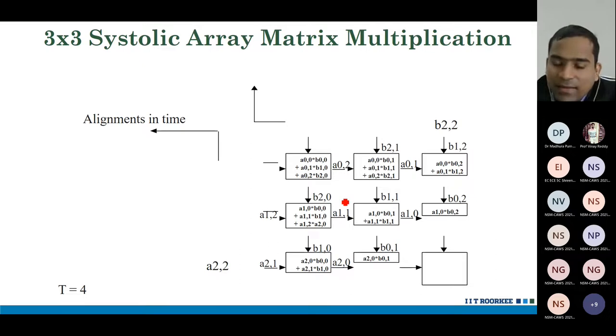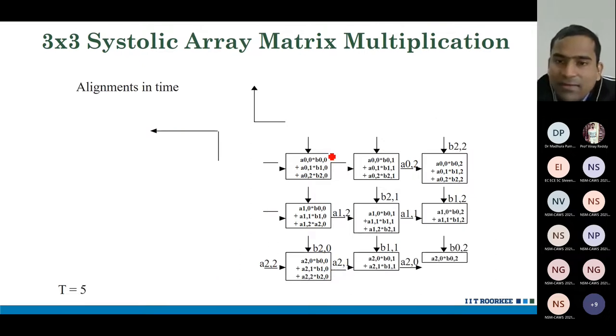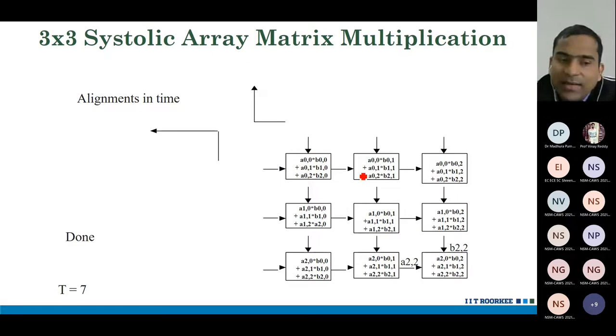Now, here, apart from this, all other PEs are working. Here, this PE has finished its computation. Other PEs have not finished. They are still working. And finally, in t equals to 7, we have finished all the computation.